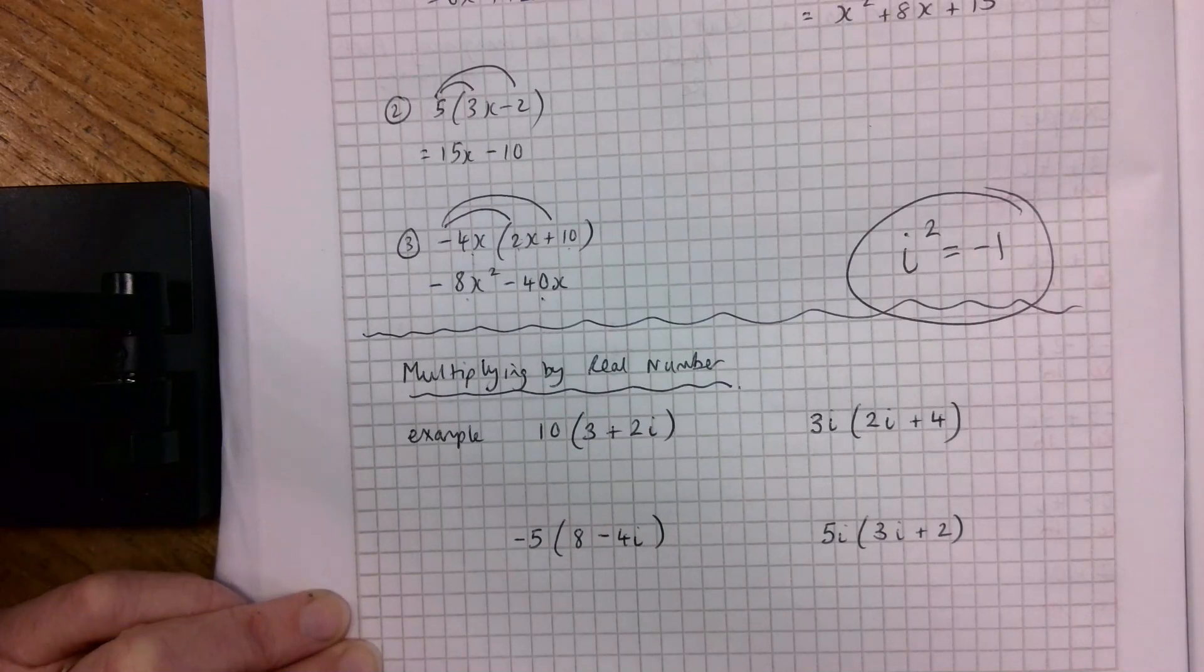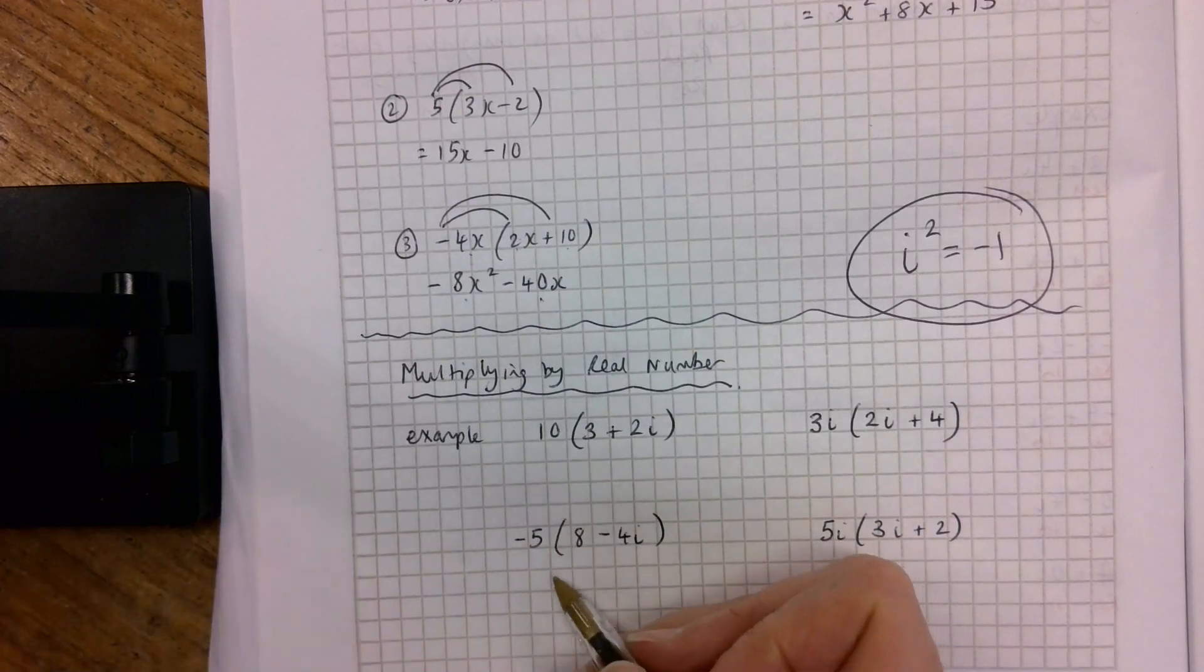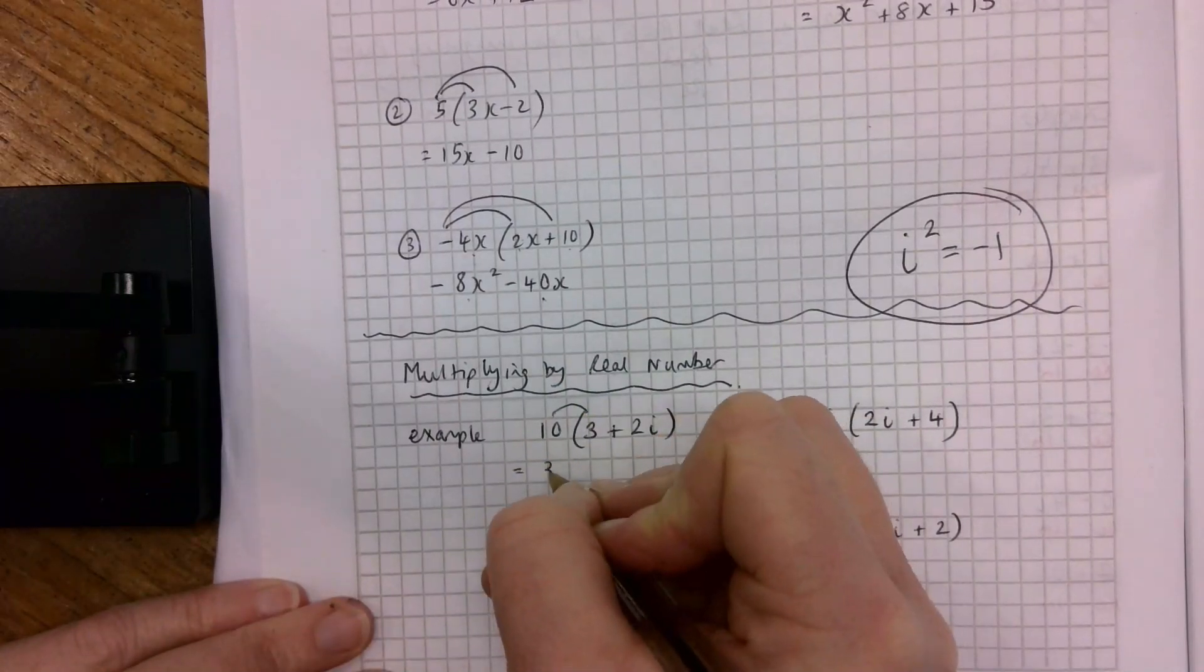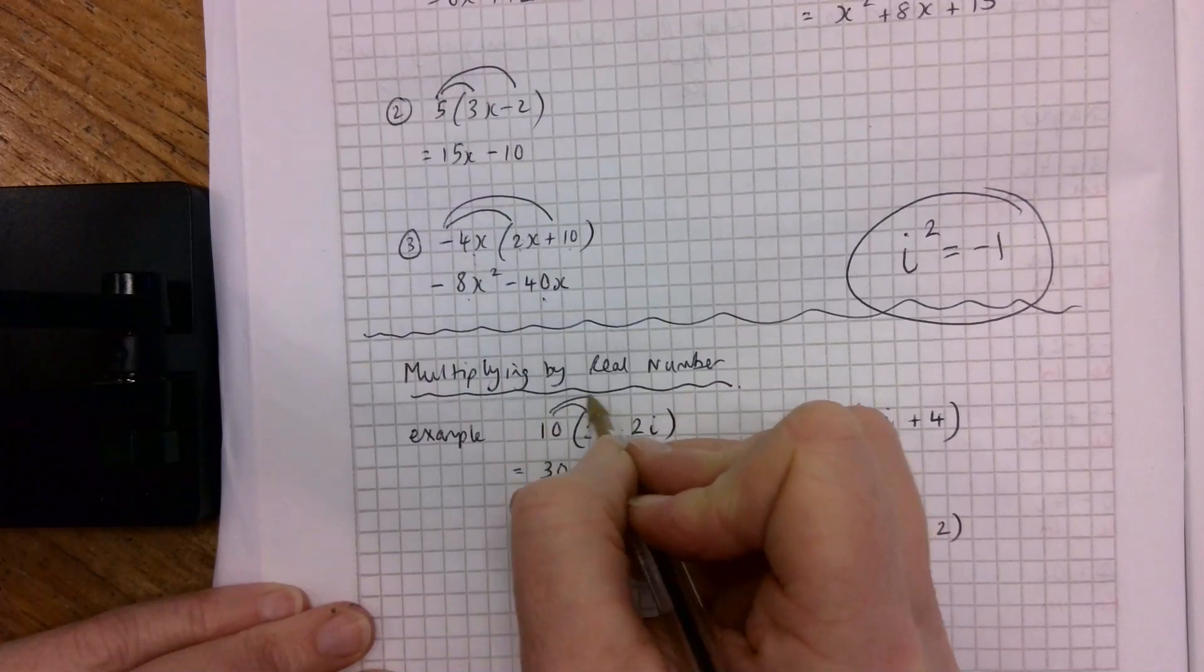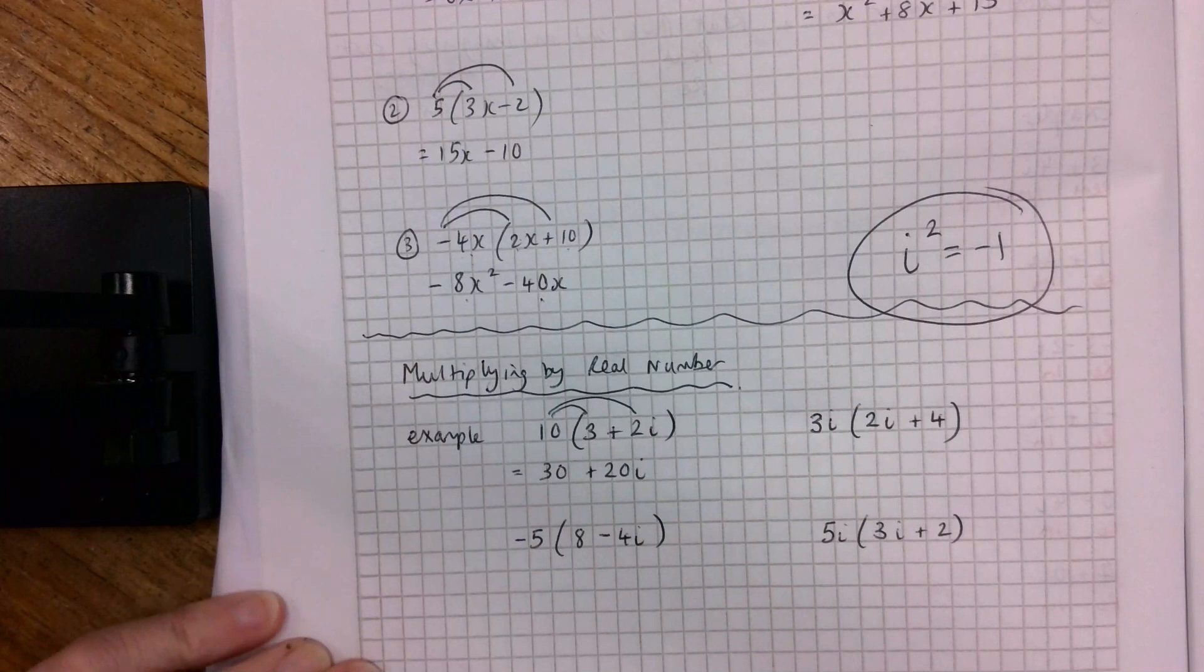But we'll just take it easy. Let's start off nice and gently and see where we get to. So we have 10 by 3 is 30, and 10 by 2i is 20i. So if you've got 30 plus 20i for the first one, that's perfect.